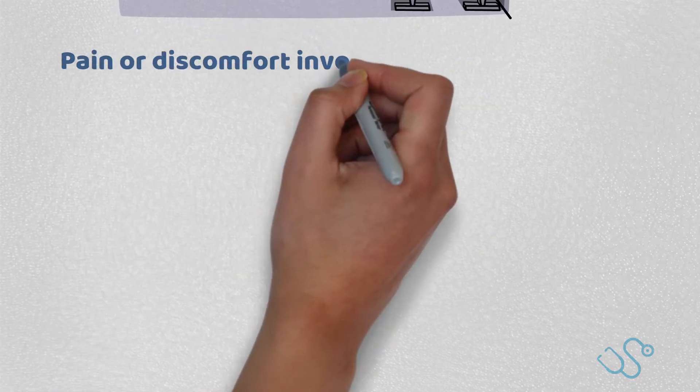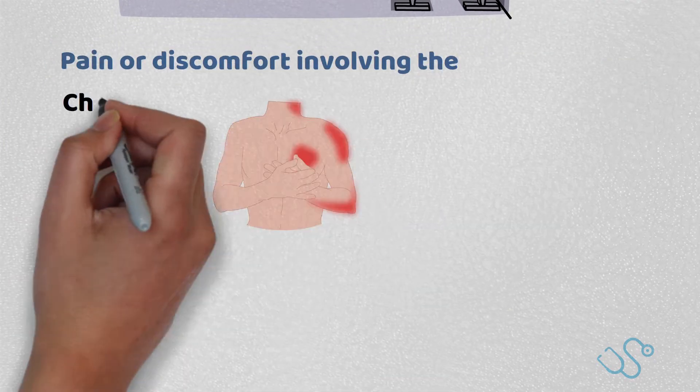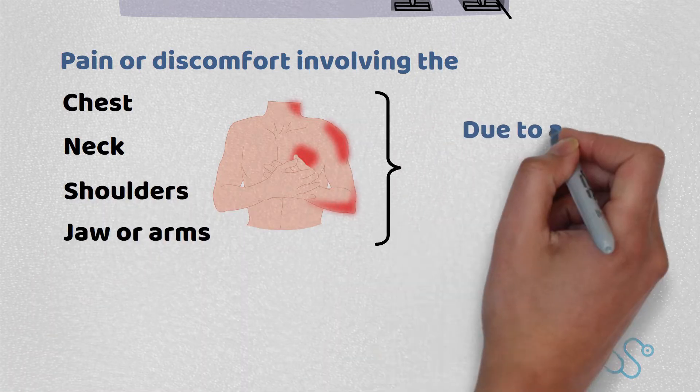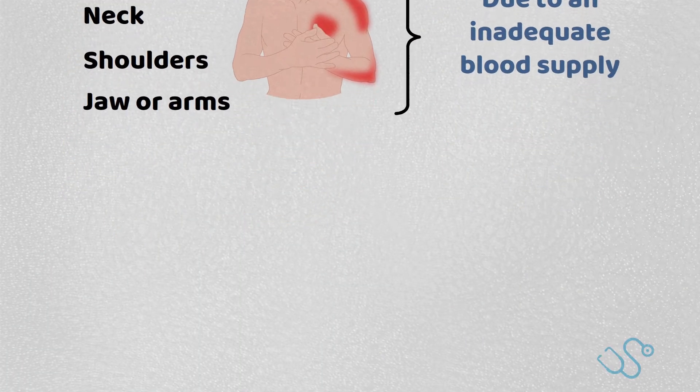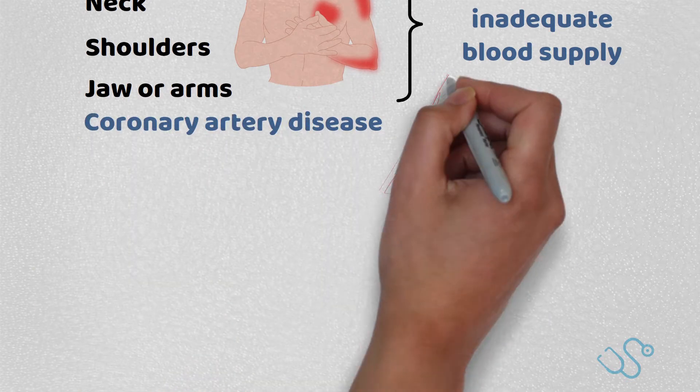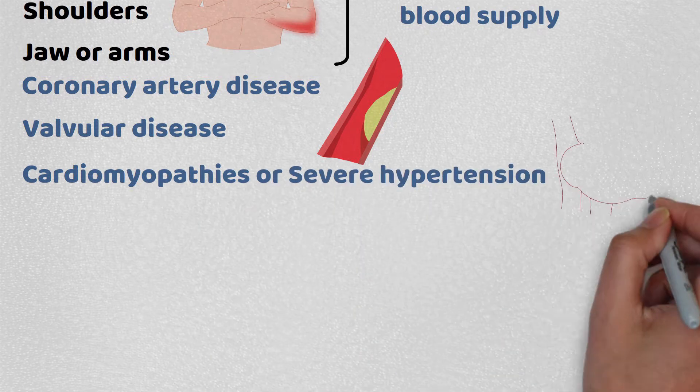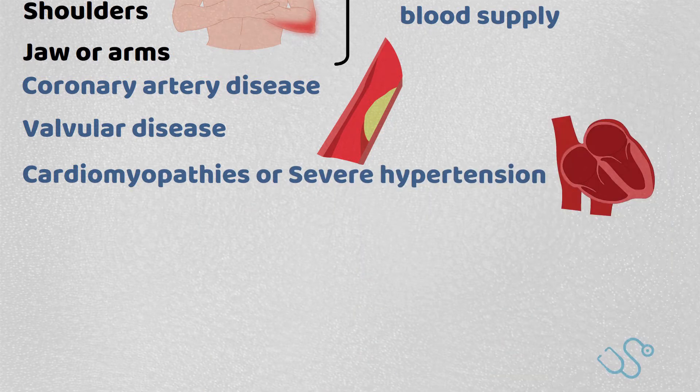Angina is effectively pain or discomfort involving the chest, neck, shoulders, jaw or arms due to an inadequate blood supply, usually because of coronary artery disease. However, sometimes this can be caused by valvular disease, cardiomyopathies or severe hypertension, but we'll be covering the former today.